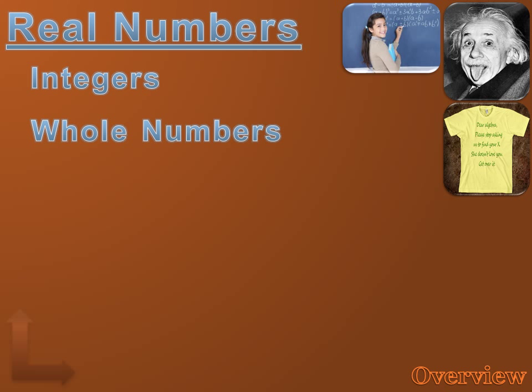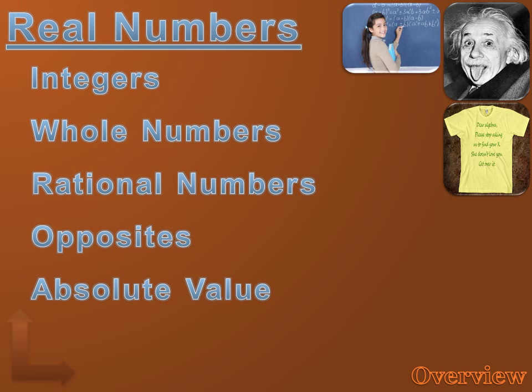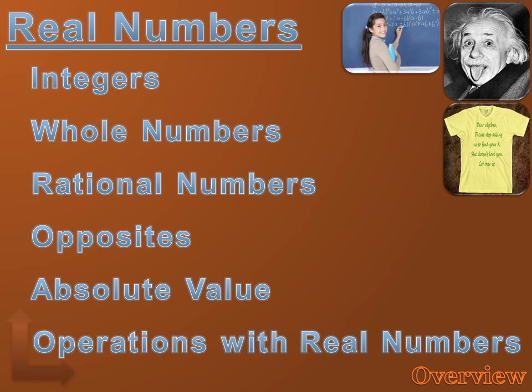Integers are real numbers. Whole numbers are real numbers. Rational numbers are real numbers. We're going to make sure we understand what each of those are. And then we're also going to talk about opposites, absolute value, and operations with real numbers.